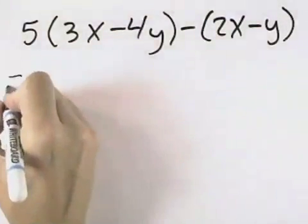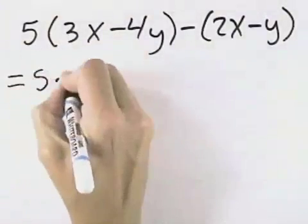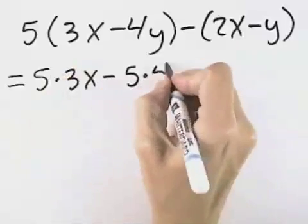In the first set of parentheses, we will multiply through by 5, so we'll have 5 times 3x, and then minus 5 times 4y.